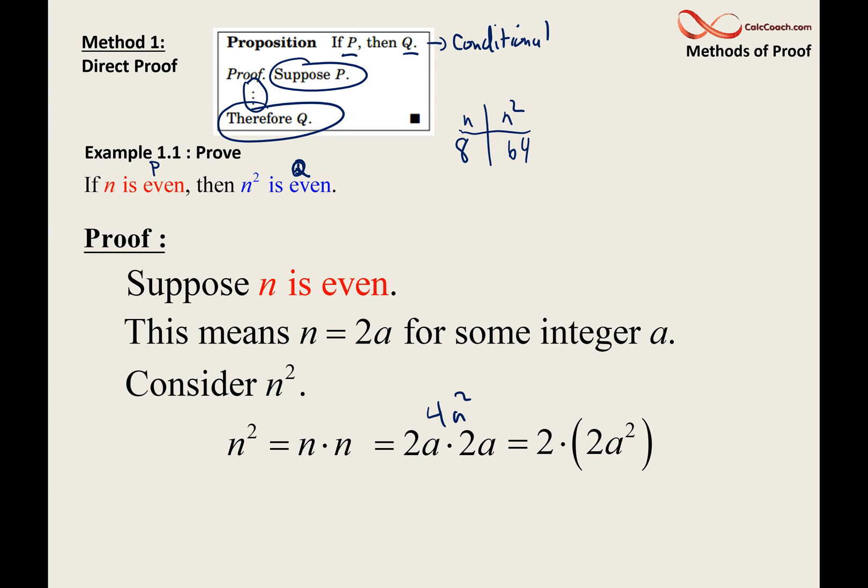So, we want to write it as 2 times another integer. The definition of being even is that the number can be written as twice an integer. a is an integer. a² is an integer. Twice a² is an integer. And so, just give this guy a renaming. Call it w. w is some integer equal to 2a². You did it. You just wrote n² as twice an integer. Well, that's the definition of n² being even. You just did a direct proof.